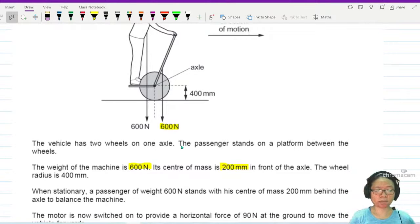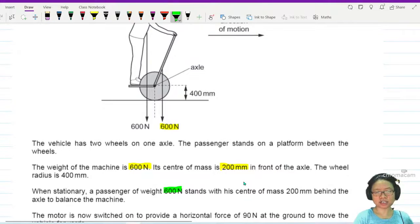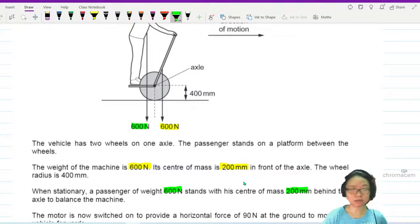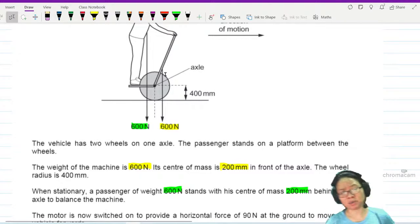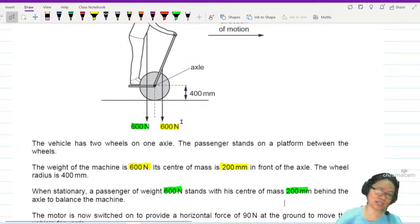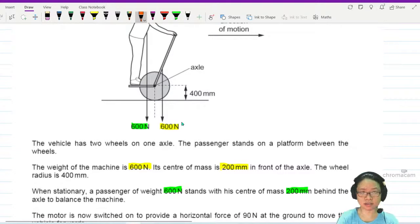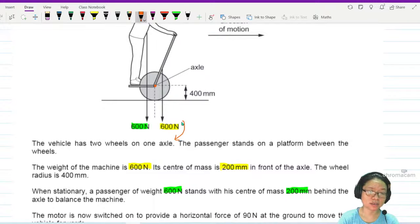When stationary, the passenger of weight 600 Newton stands with his center of mass 200 mm behind the axle to balance the machine. They will have same amount of torque. Because this is the axle, it's pretty obvious where the pivot is because the wheel will rotate. 600 Newton will turn clockwise. This weight will turn counterclockwise, they balance up.